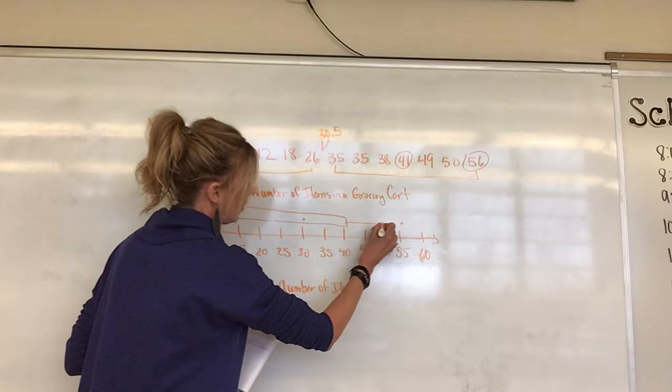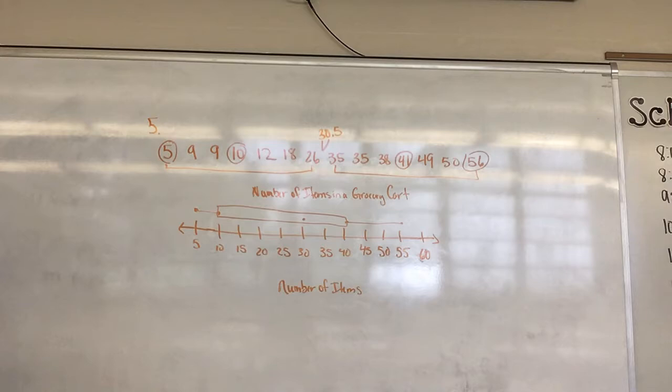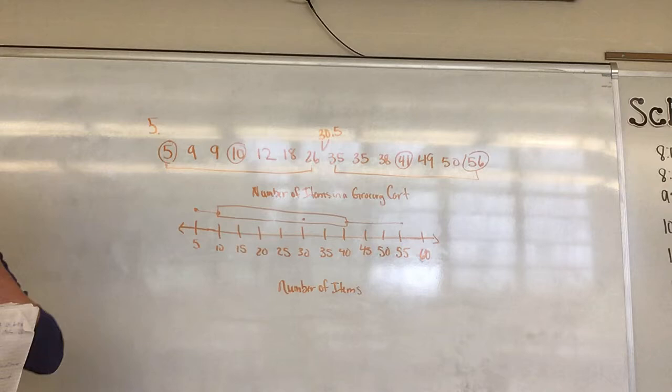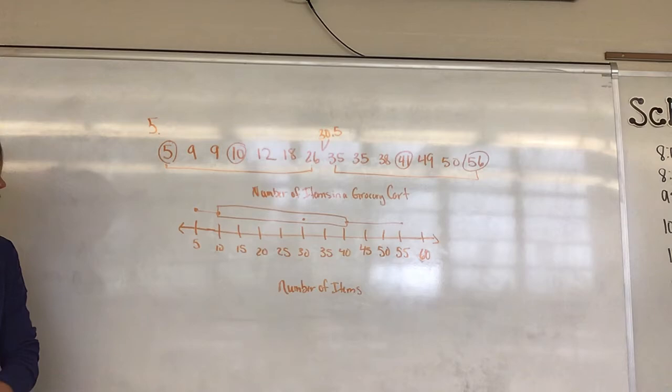Looking at that box and whisker, this is just helping us see the dispersion of data and how data goes from least to greatest — how it is dispersed amongst these numbers. That's what those two box plots look like.